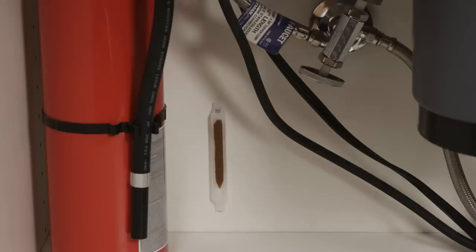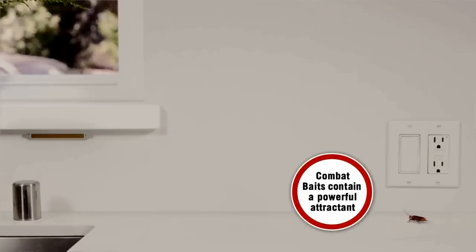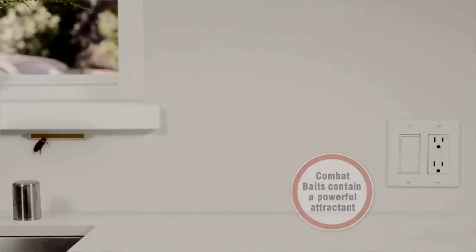Use all of the bait strips at once, placing them where you see roaches. The bait contains a blend of undetectable insecticide and a food matrix that attracts roaches to the bait strip. Roaches take the bait with them back to the nest.